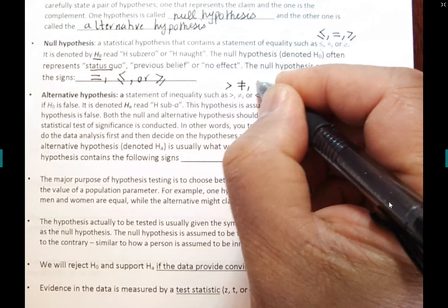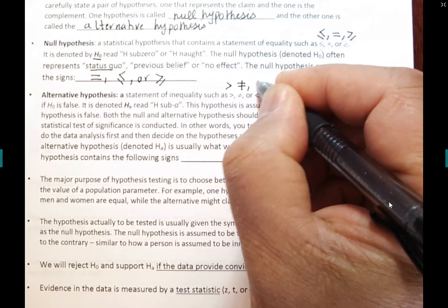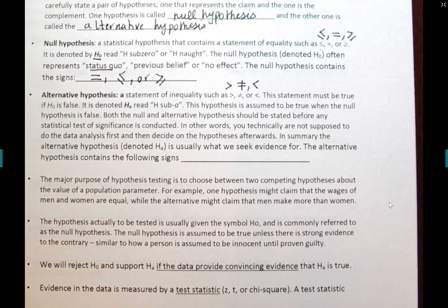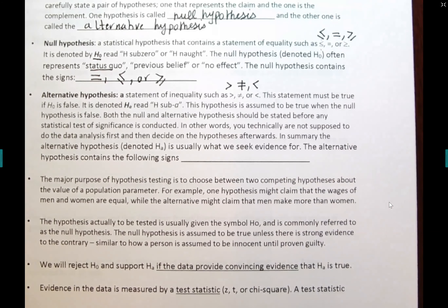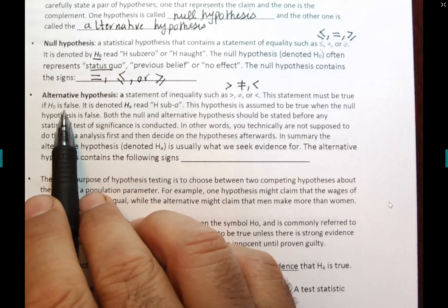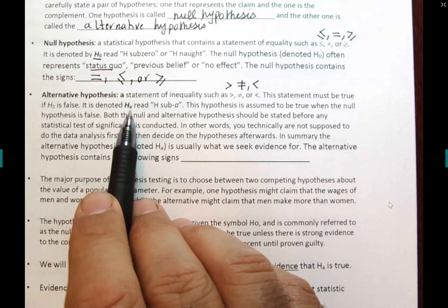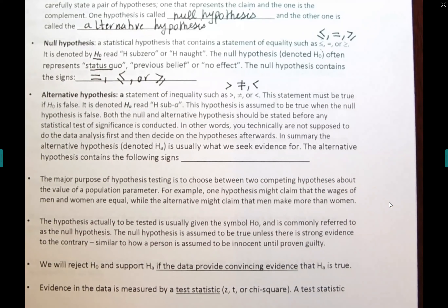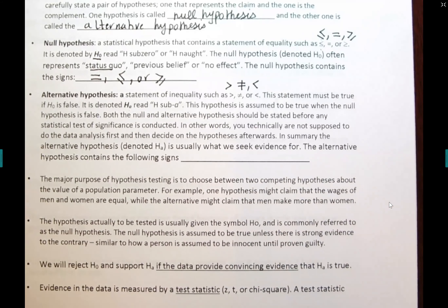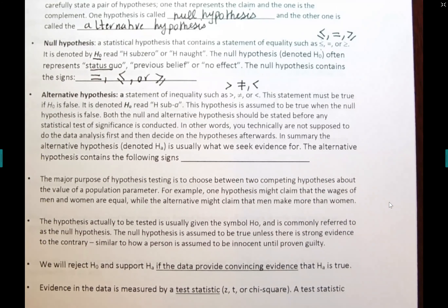The alternative hypothesis is a statement of inequality — it must have one of these signs: not equal to (≠), greater than (>), or less than (<). This statement must be true if the null hypothesis is false. If 'it is raining' is false, then 'it is not raining' must be true. The alternative hypothesis is denoted Hₐ. Both the null and alternative hypotheses must be stated in any hypothesis test. You have to state H₀ and Hₐ — they represent two competing sides of the argument.